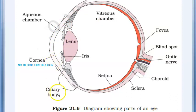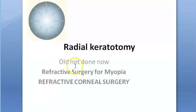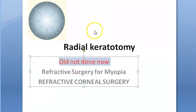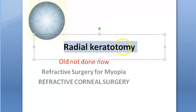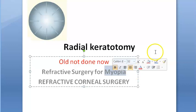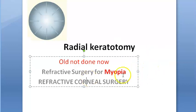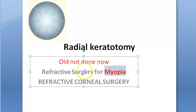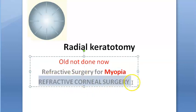In this cornea they are going to make some radial cuts. This is a very old procedure - it is not done now - but for exams you will have to know radial keratotomy. It is basically a surgery to fix myopia, which is short sight - a refractive error. So this is a refractive corneal surgery.